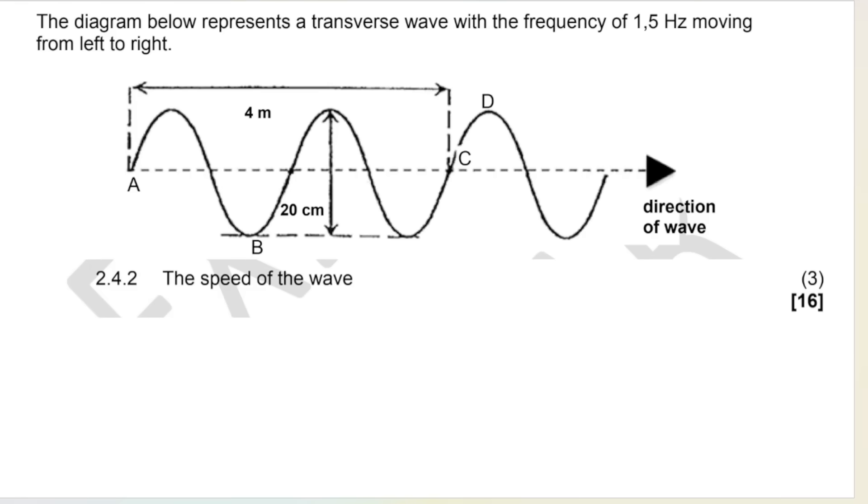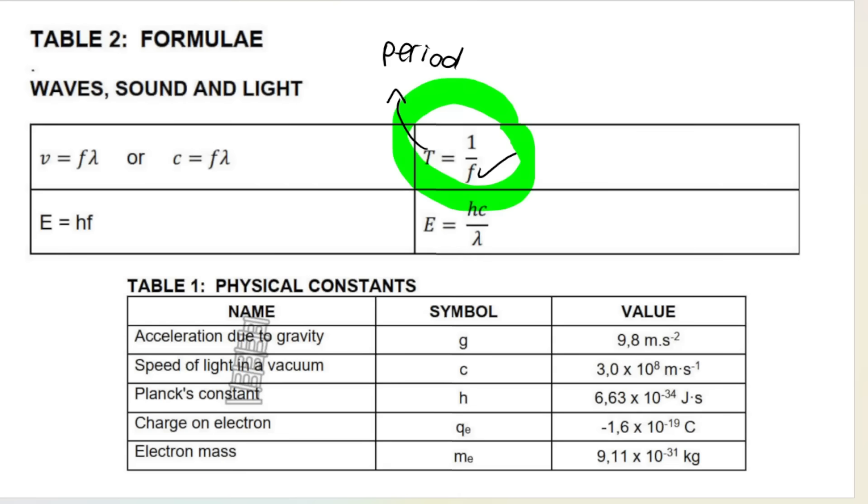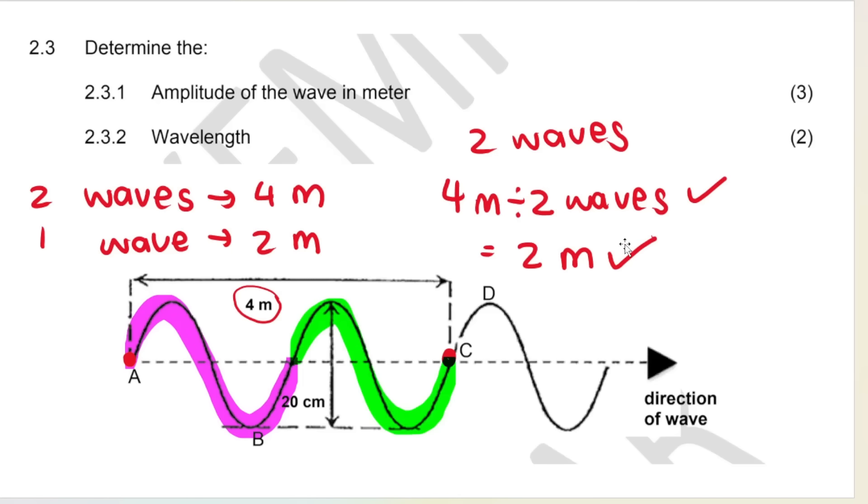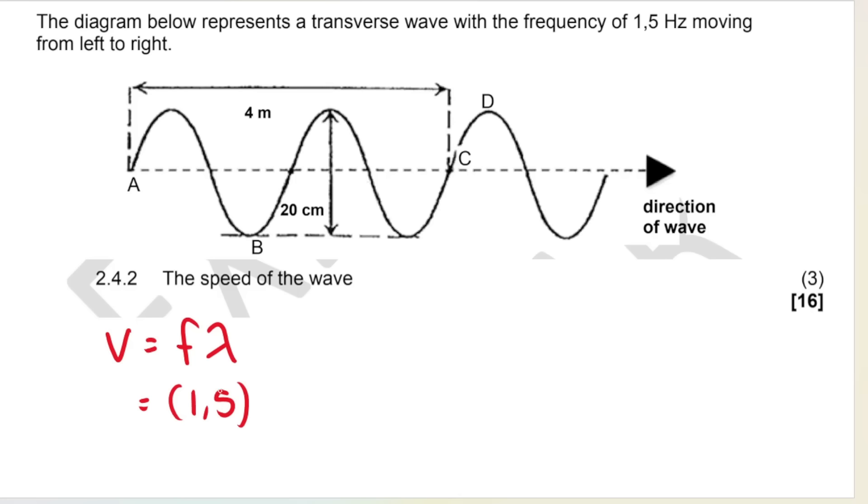This question wants the speed of the wave. So if we look at our formulas, we want speed, which is V. We have the frequency and we have the wavelength. So that's what we do. We use speed is equal to frequency times wavelength. Our frequency is 1.5 hertz. And our wavelength, remember, we just calculated our wavelength in the previous question. It was 2 meters. So 1.5 times 2. Our speed is 3 meters per second. Formula, substitution, answer with units.